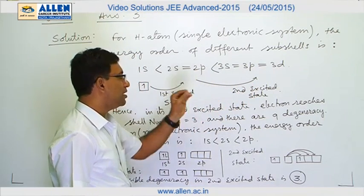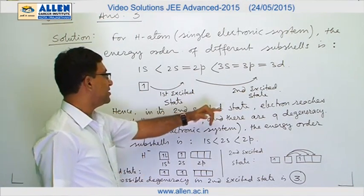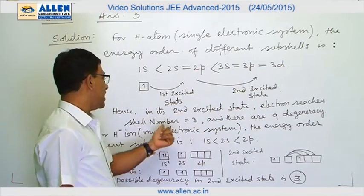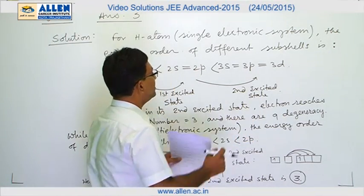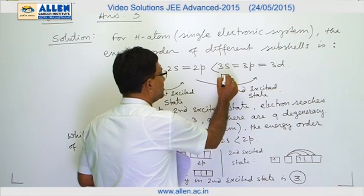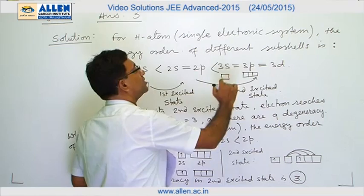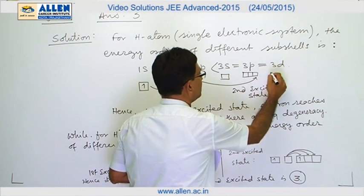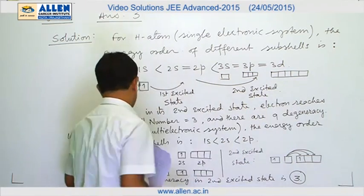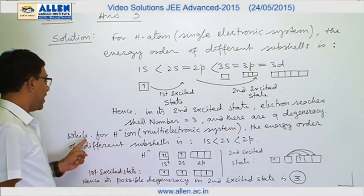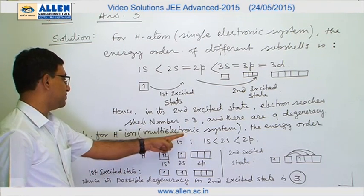The possible degeneracy is nine, as given in the question paper. In the second excited state, the electron reaches shell number three. The nine degeneracy is explained as: 1 subshell in 3s, three sub-orbitals in 3p, and five sub-orbitals in 3d, giving a total of nine.